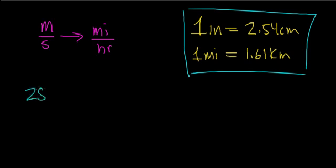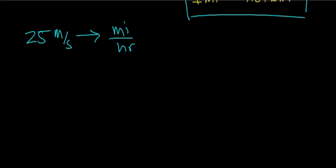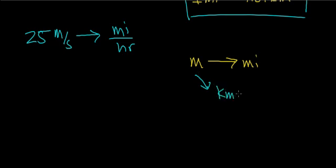In this problem, let's convert 25 meters per second over to units of miles per hour. As a general strategy, I don't know how to go from units of meters to miles directly, but I can follow an alternative path because I know there is a relationship between meters and kilometers, and then a relationship between kilometers and miles. That will be our length conversion.